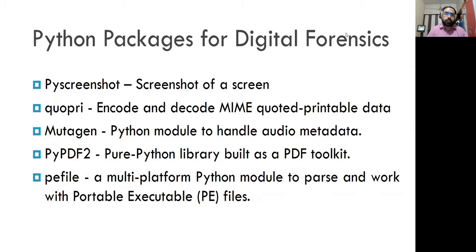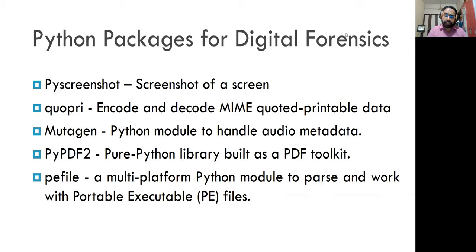Some Python modules for digital forensics include PyScreenshot, which takes screenshots of a screen; QPRI, which does encoding and decoding of MIME information — MIME stands for multi-purpose internet mail extensions used for sending and receiving emails; Mutagen, a Python module to handle audio metadata; PyPDF2, a PDF toolkit that handles metadata associated with PDF files; and PE File, a multi-platform Python module to parse and work with portable executable files. Note that all these Python packages are pure Python, meaning they don't need any dependency.